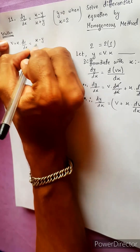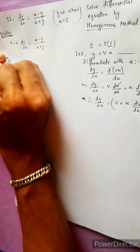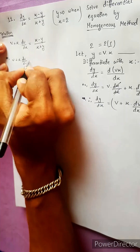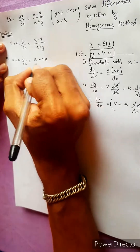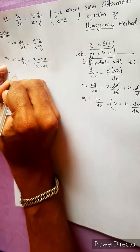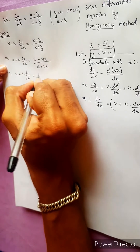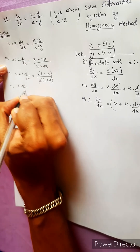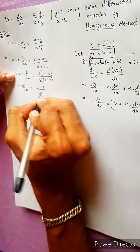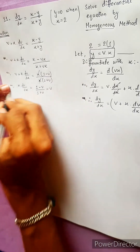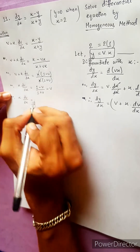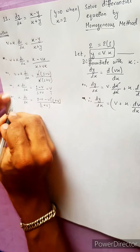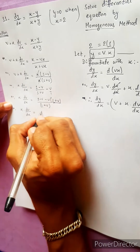The equation is dy/dx equals (x minus y) divided by (x plus y). Now substitute v = y/x. Taking x common from numerator: x(1 - v), and from denominator: x(1 + v). The x's cancel, giving dv/dx equals (1 minus v) over (1 plus v) minus v, with x·dv/dx on the left.